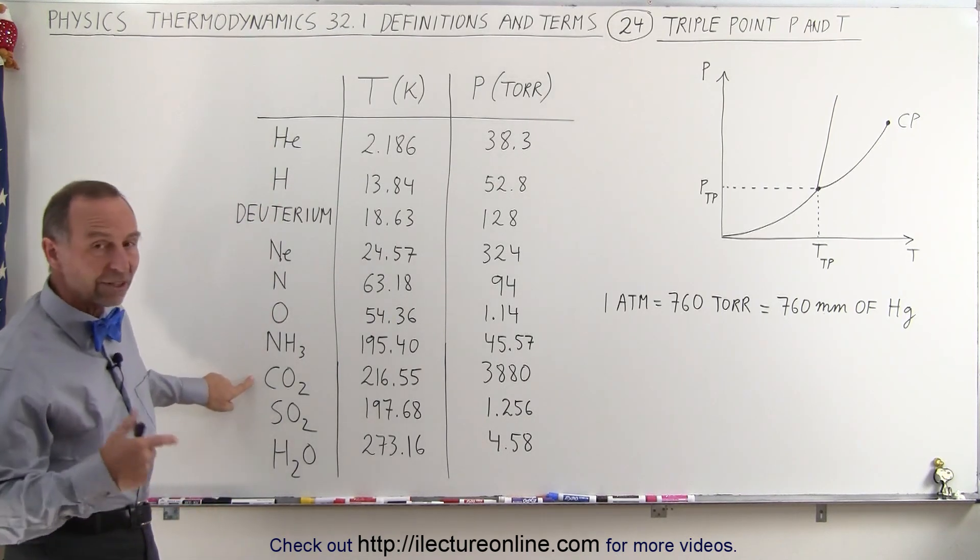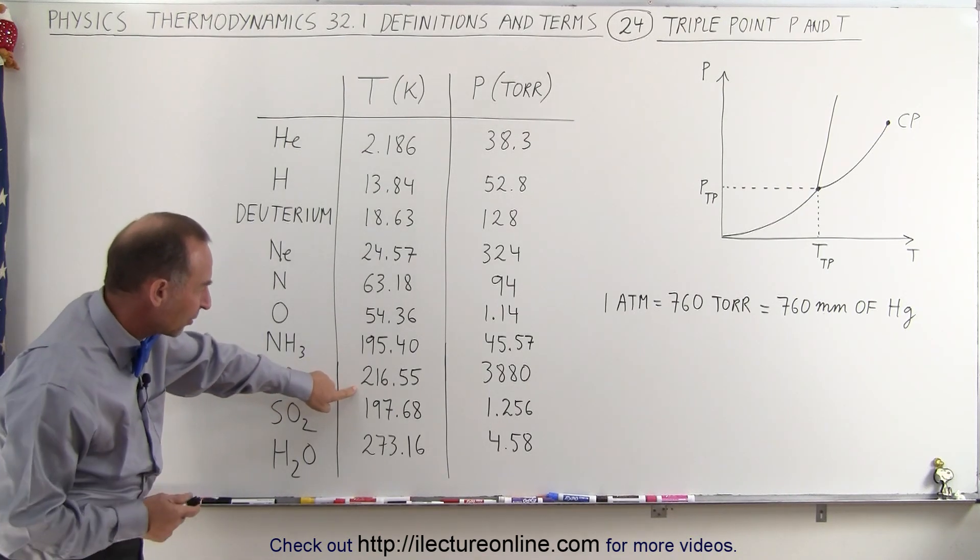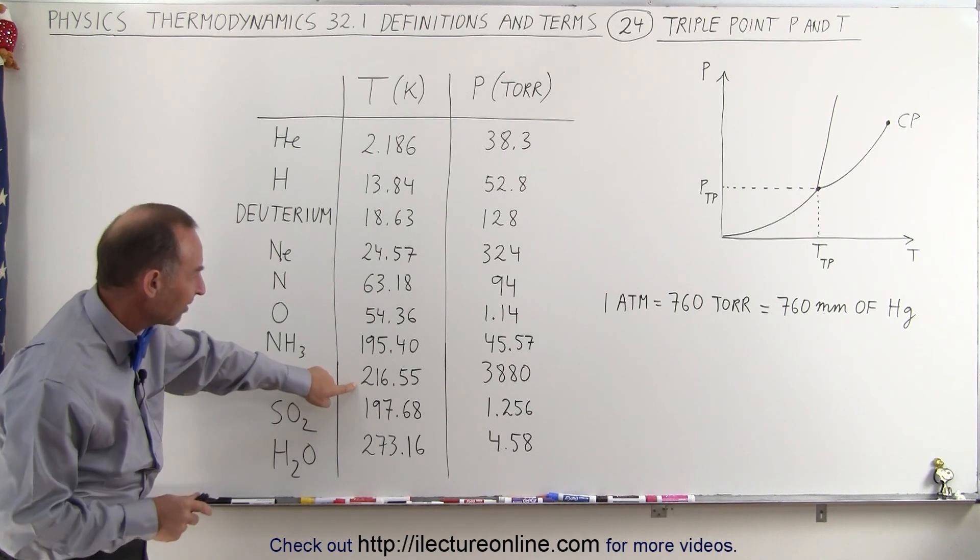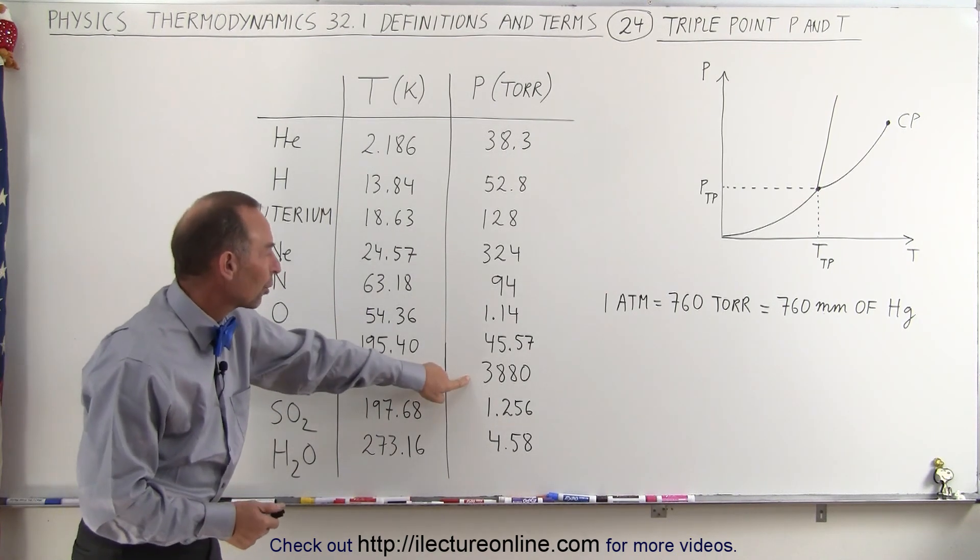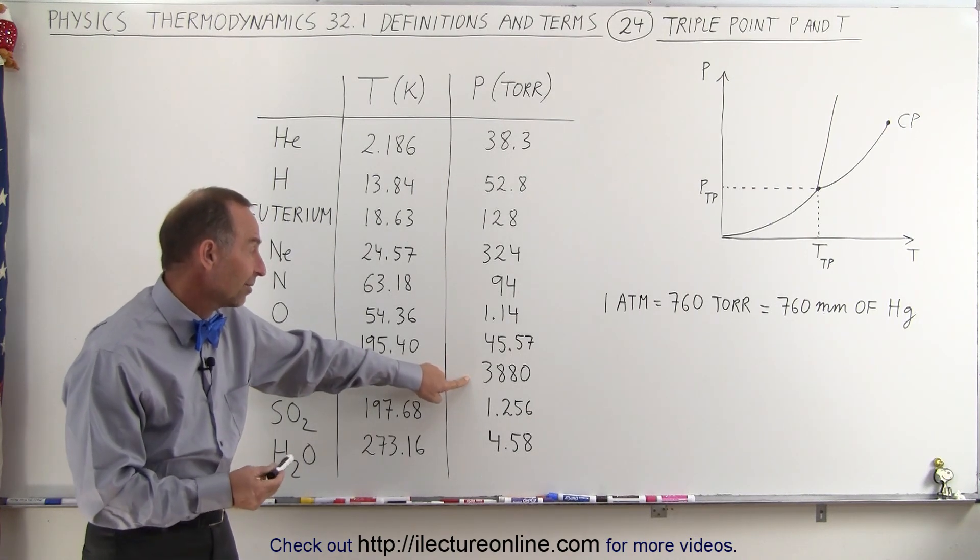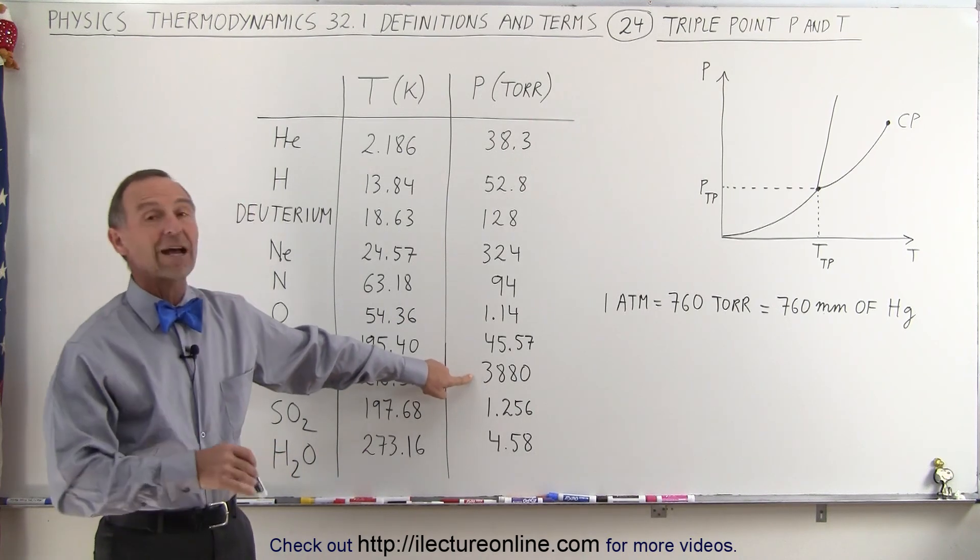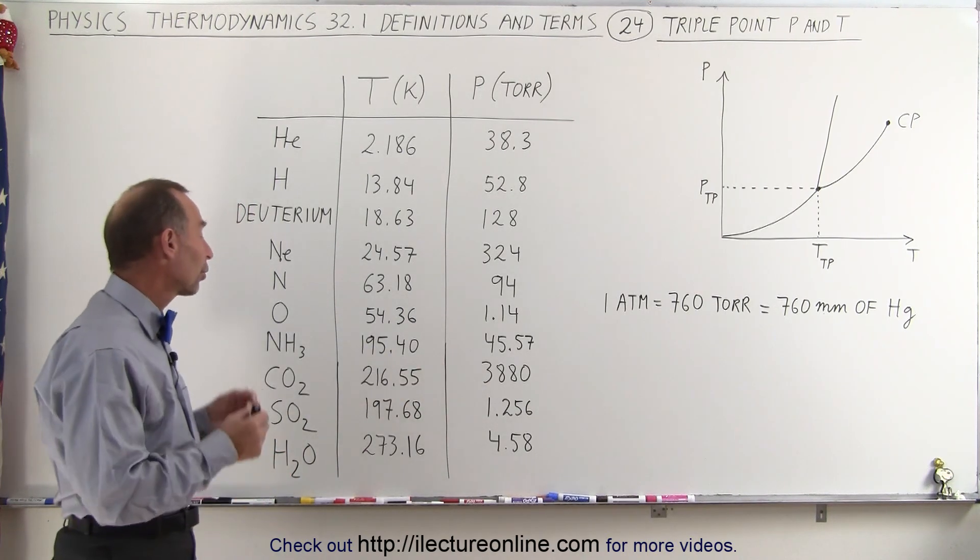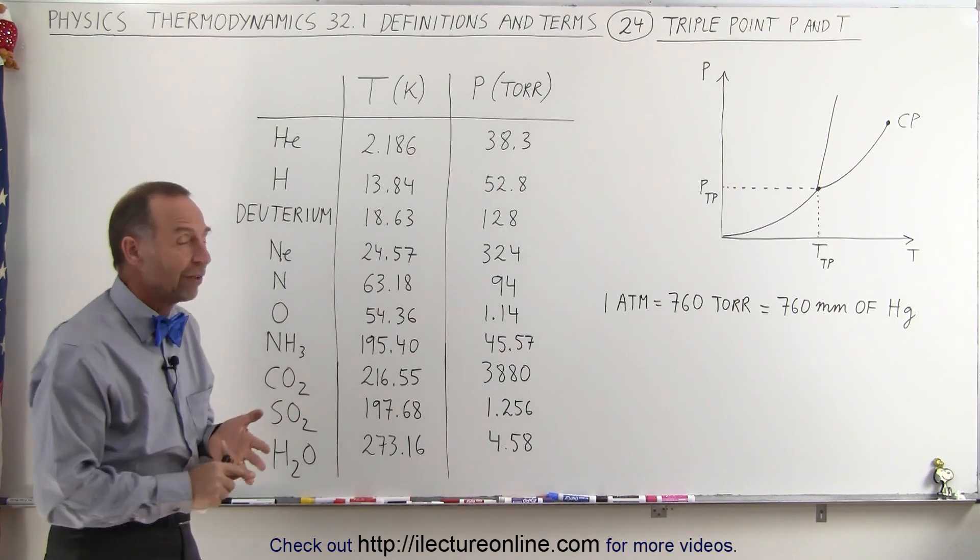And then carbon dioxide is kind of an outlier, where even though the temperature seems reasonable, which is about 60 or so, a little less than 60 degrees below freezing. But notice that the pressure required is very high. So that would be about five times seven, so about five times atmospheric pressure required so that carbon dioxide can exist in both the liquid, the solid, and the vapor phase.